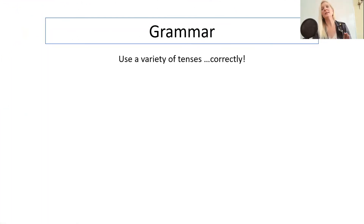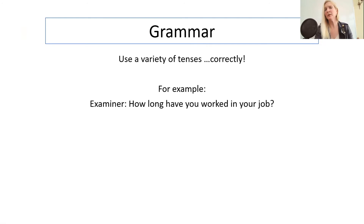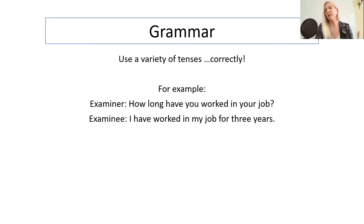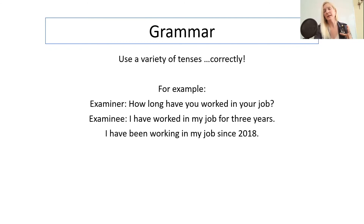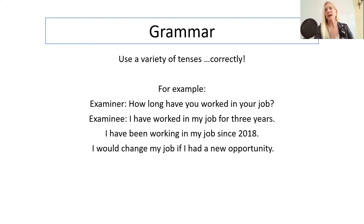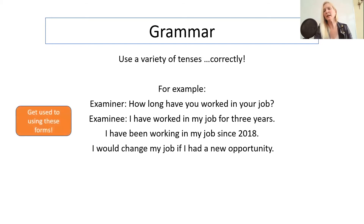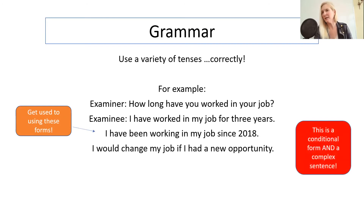Use a variety of tenses correctly. For example, the examiner asks you how long have you worked in your job? You could say 'I have worked in my job for three years' or 'I have been working in my job since 2018.' Both of these forms are correct. 'I would change my job if I had a new opportunity' — here you're using the second conditional. So get used to using the present perfect, present perfect continuous if you can, the second conditional, and also the future and the past form.